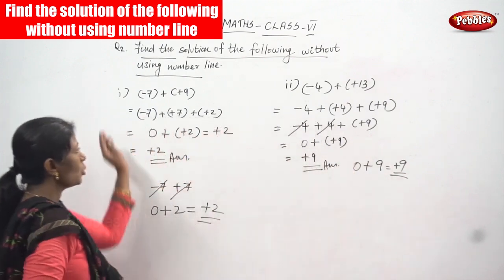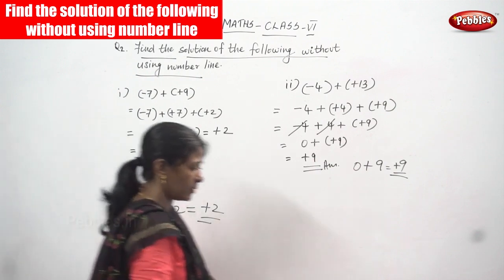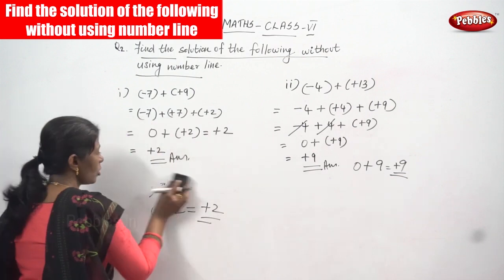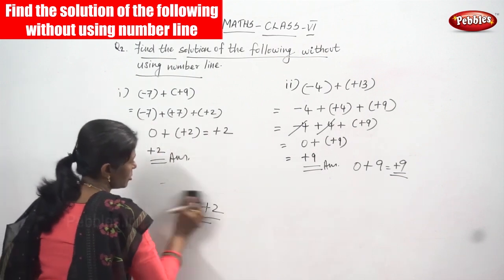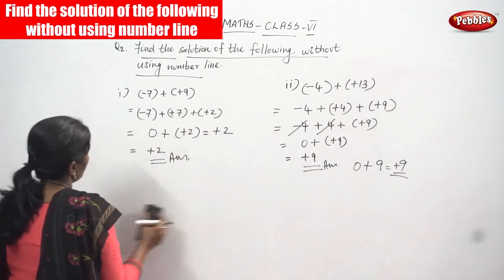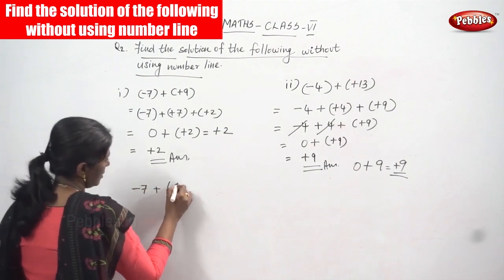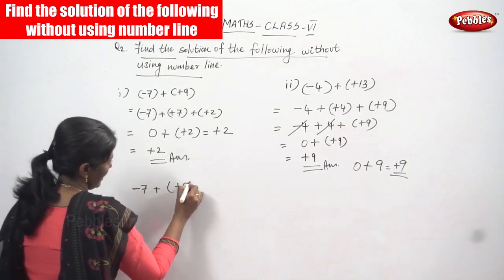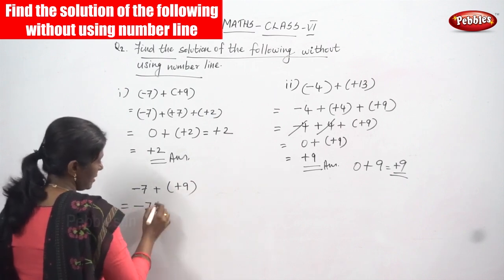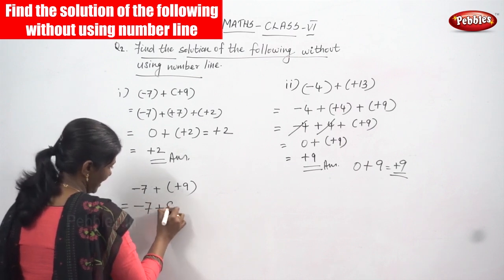Sometimes you may be a little confused, so I'll tell you one more method. I think this one is easier. Whichever is convenient for you, you can choose any one of these methods. So minus seven then plus — here plus nine. First you write minus seven as it is, then put plus into plus, which gives plus nine.